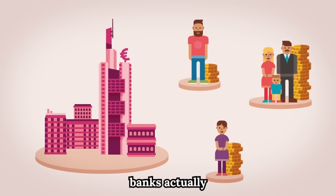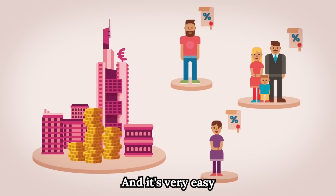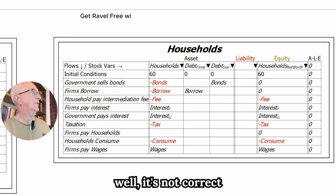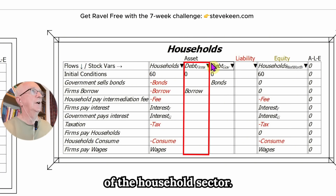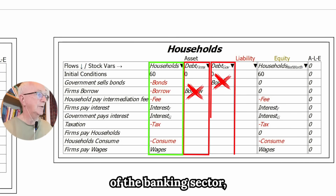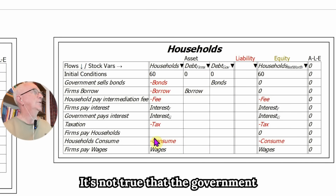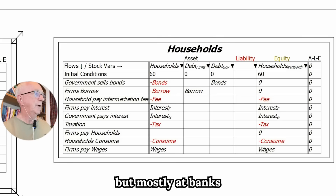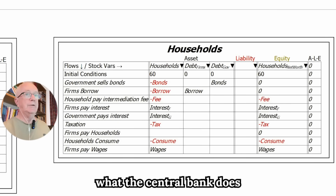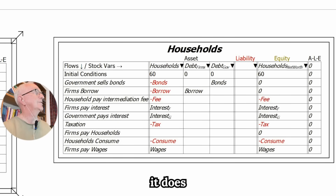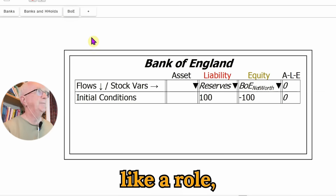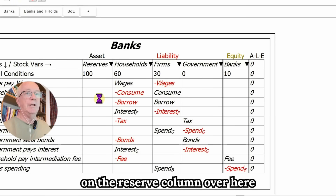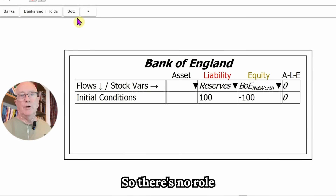Because banks are not intermediaries — banks actually originate both money and debt. It's not correct that the debt of firms is an asset of the household sector; the debt of firms is an asset of the banking sector, and the same for the debt of government. The government mostly banks at the central bank, not at private banks. And if you look at what the central bank does in the model of loanable funds, it does — to use an Australian expression — bugger all. There's nothing happening on the reserve column in the loanable funds model. There's no role for the central bank.